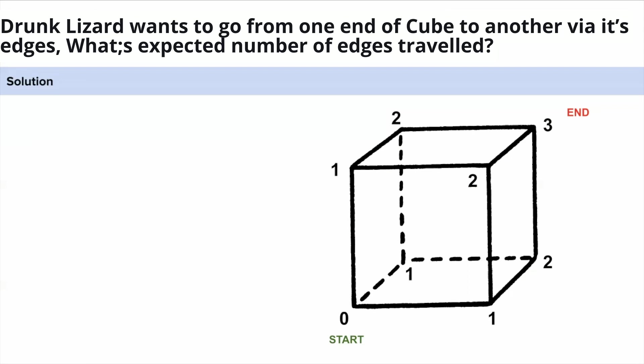How can we write E(0)? E(0) we can write as 1 + 1/3 × [E(1) + E(1) + E(1)]. And why we have taken this 1/3, because each one has equal probability to come from zero.